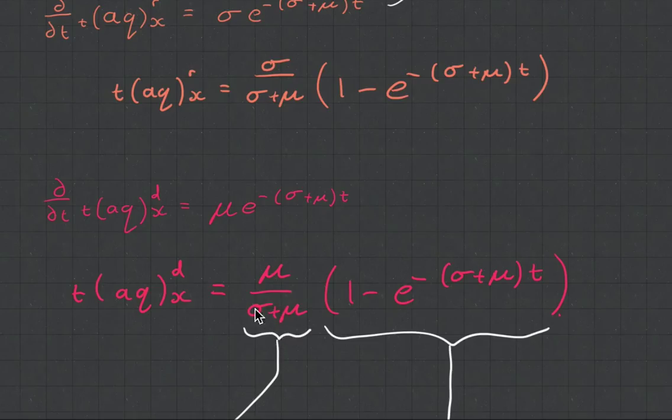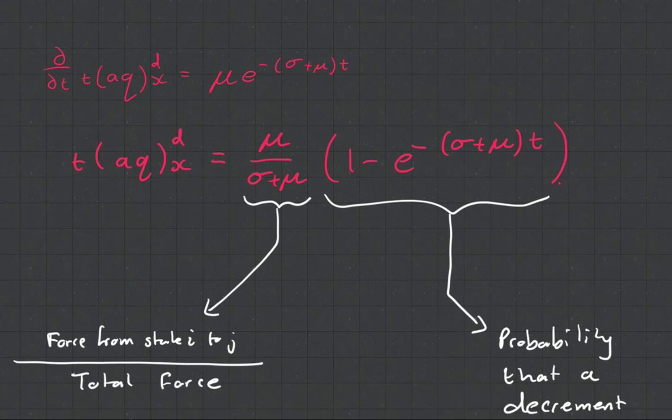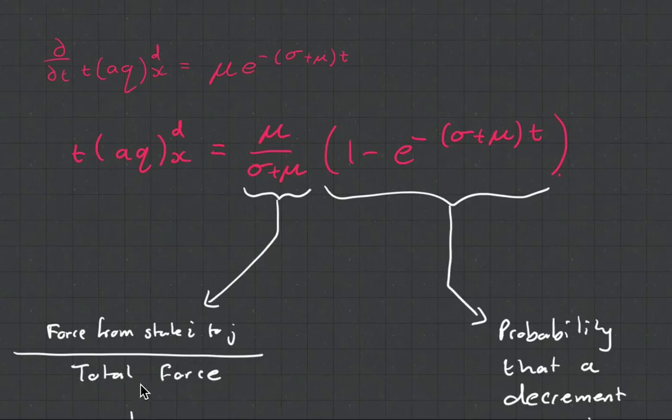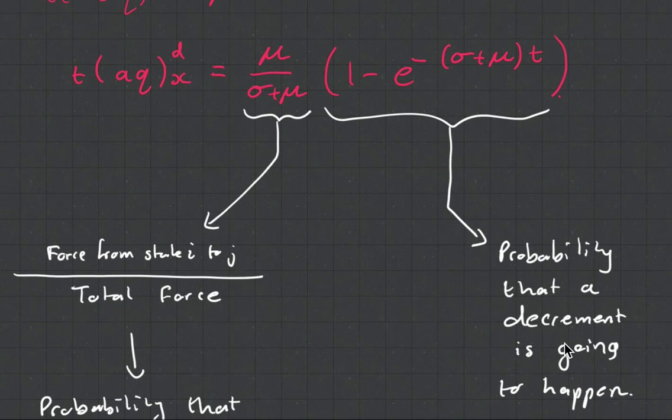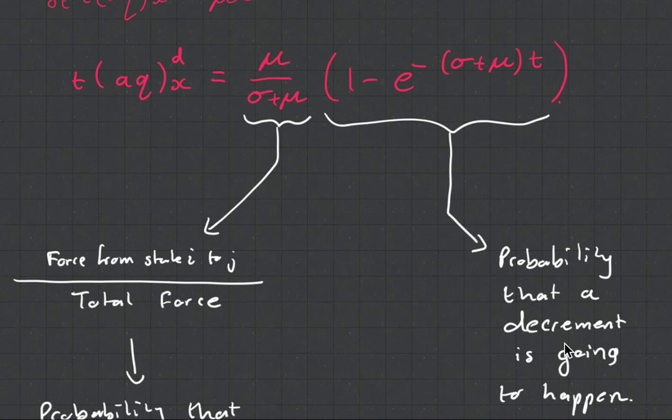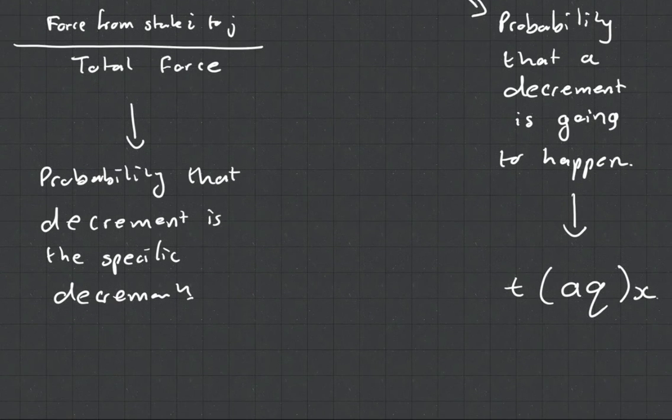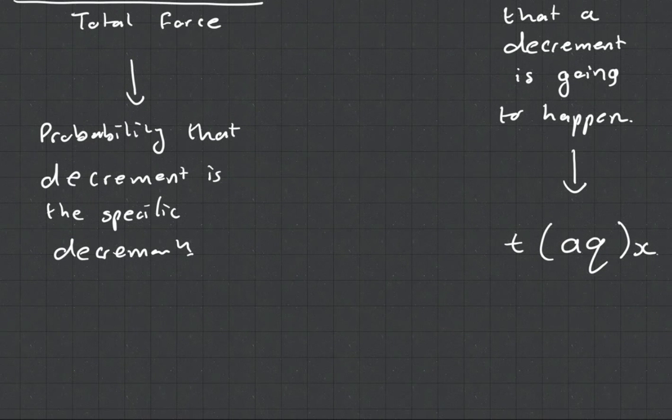Okay the first section is saying that if a decrement is to happen the probability that it's that decrement, it's the transition divided by all the other transitions or otherwise known as force from state i to j divided by total forces and then you have the probability that a decrement actually is going to happen. So it is rather straightforward. I don't know if I've explained it that well but I do want to keep moving because I want to get the whole of chapter 10 within one video and there's some more important stuff we need to talk about.